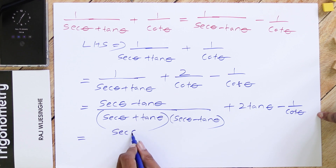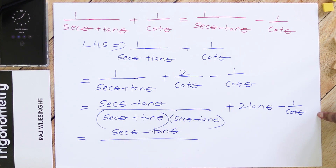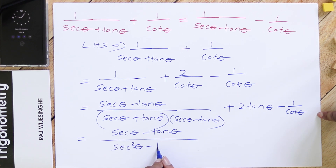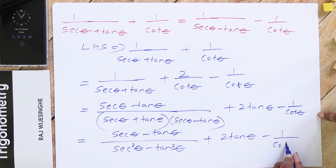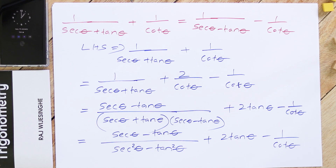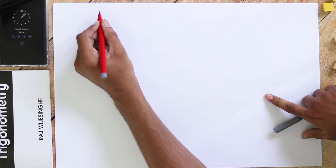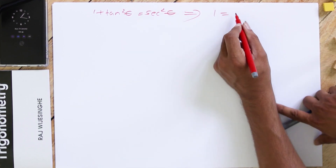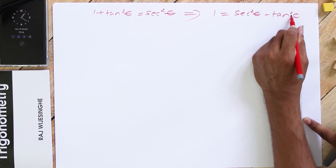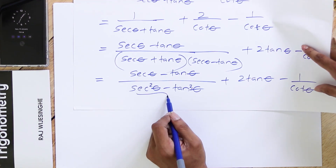Now (sec θ + tan θ)(sec θ − tan θ) is a difference of squares — it equals sec²θ − tan²θ. From our basic trigonometric identity, 1 + tan²θ = sec²θ, which means sec²θ − tan²θ = 1. So we can write sec²θ − tan²θ as 1, giving us (sec θ − tan θ)/1 in the numerator. The denominator simplifies to 1.